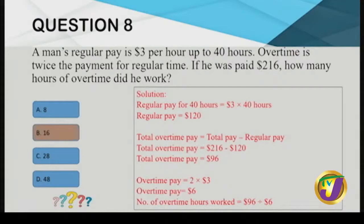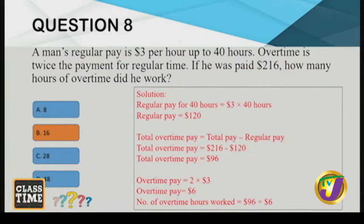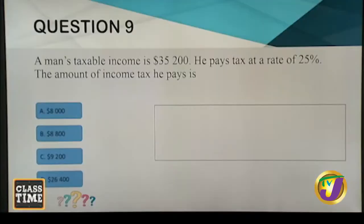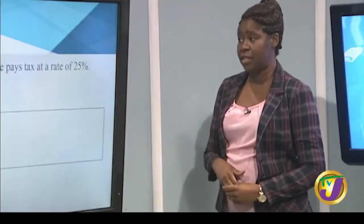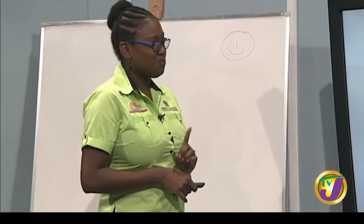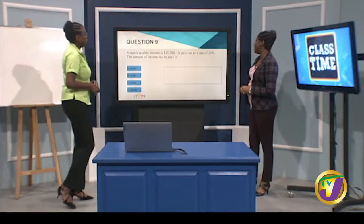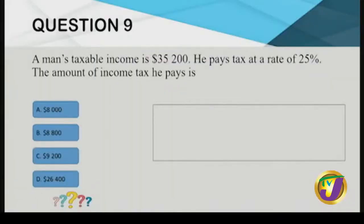Question nine: a man's taxable income is $35,200 and he pays tax at a rate of 25%. The amount of income tax he pays is — we want 25% of $35,200. Income tax is a deduction we all have to pay while working. Note that 25% is the same as one-quarter, so we can divide $35,200 by 4.